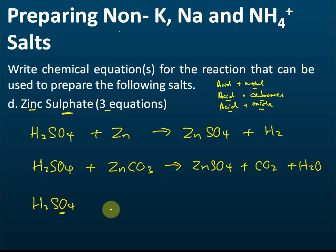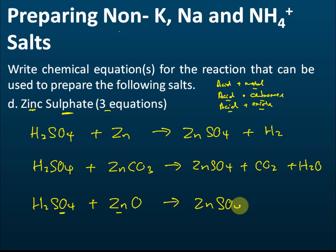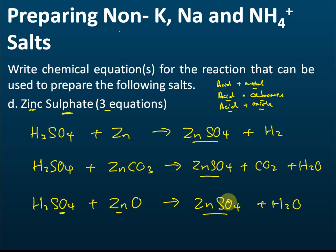We use zinc oxide because we want zinc in the salt. The products are zinc sulfate and water. All three reactions produce zinc sulfate. For salts that are not sodium, potassium, or ammonium, you can use any one of these three reactions — just choose based on what chemicals you have in your lab. If you have zinc carbonate, use that; if you have zinc oxide, use zinc oxide.